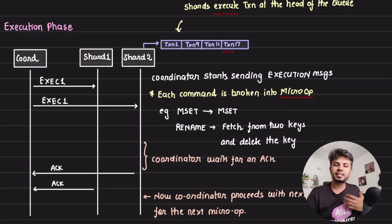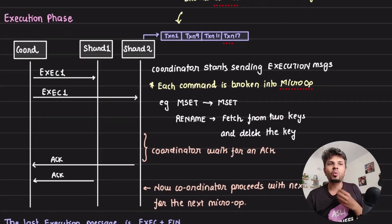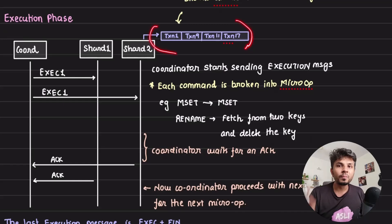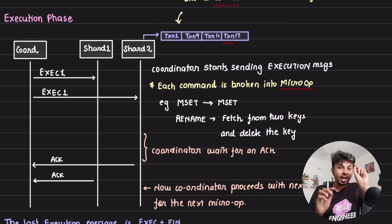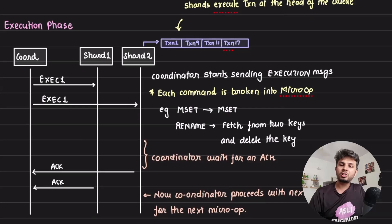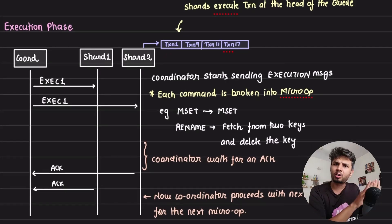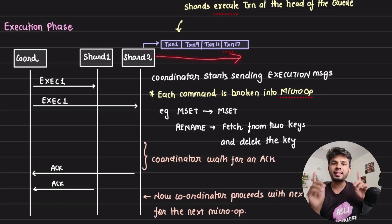When the message is received by a particular shard thread, it executes it. But here's the catch. This is a transaction queue. It always executes the command or the transaction that is at the head of the queue. If it receives the execution statement from some other transaction which is not at the head of the queue, it will be blocked for some time until it receives the execution from the transaction which is at the head of the queue.